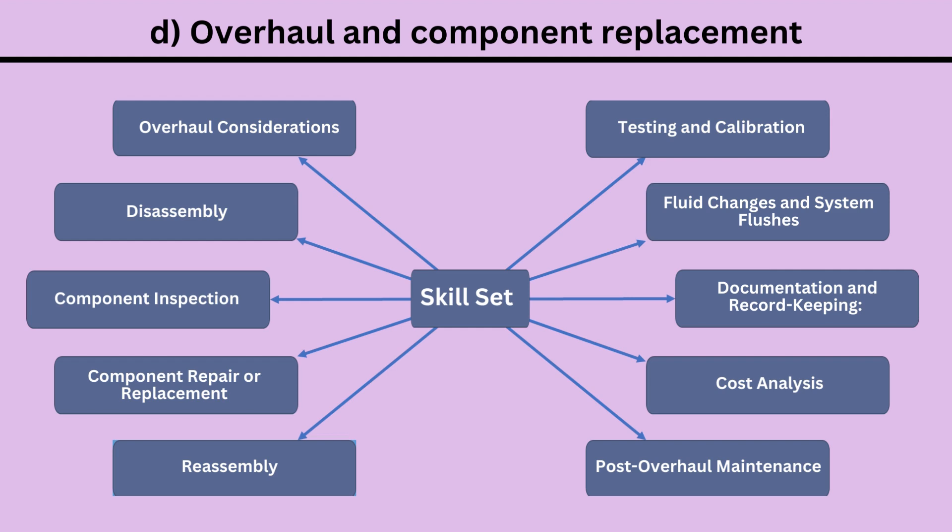Here are more details about construction equipment overhaul and component replacement: 1. Overhaul considerations. 2. Disassembly. 3. Component inspection. 4. Component repair or replacement. 5. Reassembly. 6. Testing and calibration. 7. Fluid changes and system flushes. 8. Documentation and record keeping. 9. Cost analysis. 10. Post-overhaul maintenance.